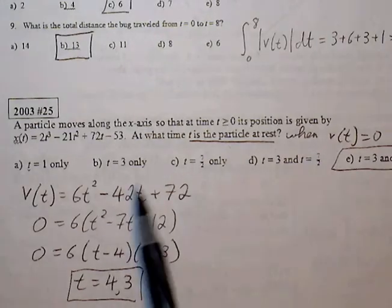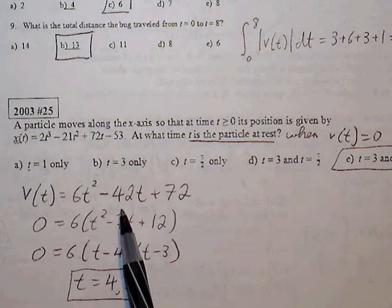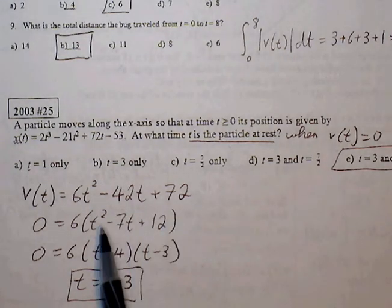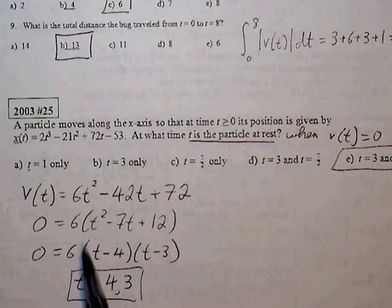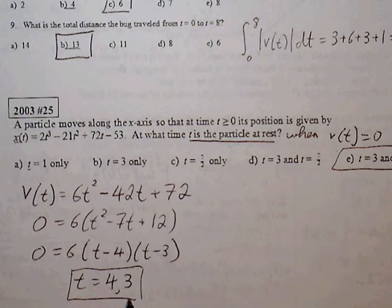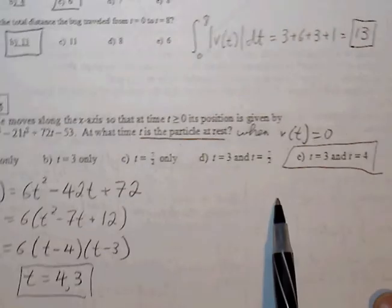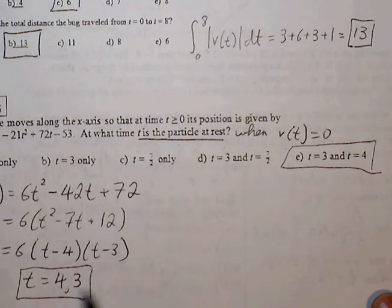To get the velocity, we find the derivative. 6t squared minus 42t plus 72, set equal to 0. We factor out the 6, and we get 3 and 4. So when t is equal to 3 and 4 seconds, our velocity is equal to 0.